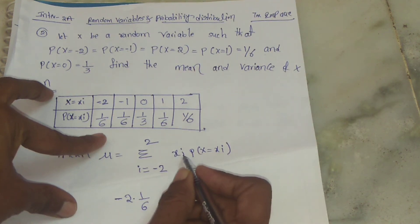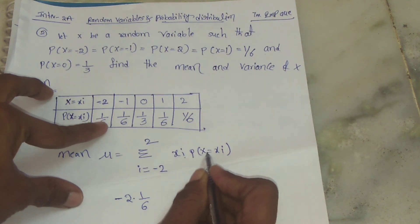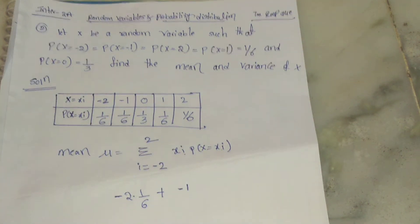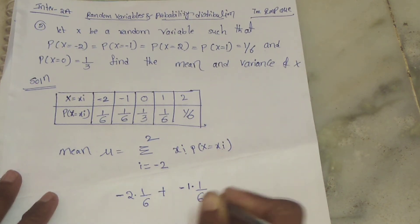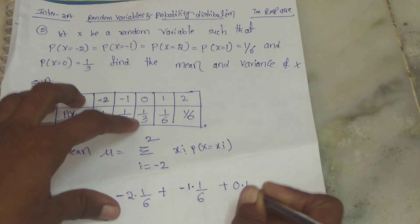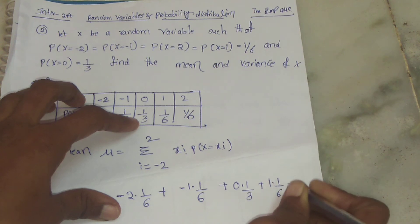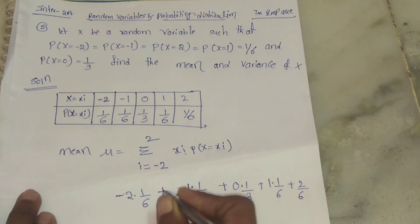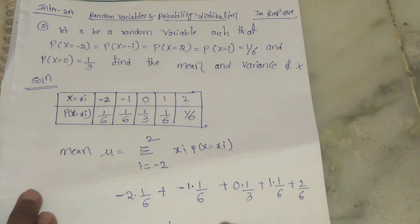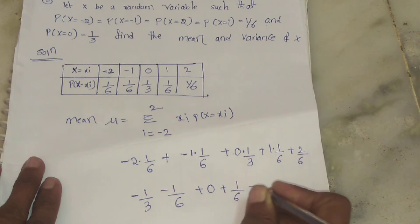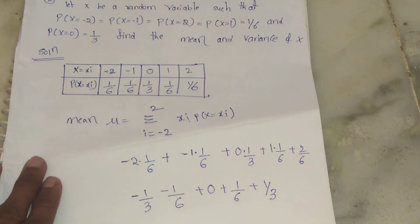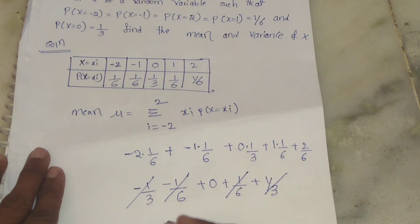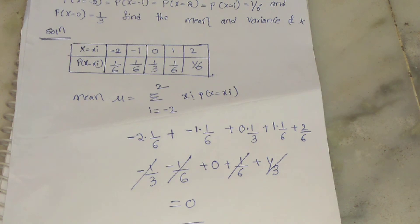Substituting: μ = (-2)(1/6) + (-1)(1/6) + (0)(1/3) + (1)(1/6) + (2)(1/6). This gives us -2/6 - 1/6 + 0 + 1/6 + 2/6. All terms cancel out: +1/6 - 1/6 - 1/3 + 1/3 = 0. So the mean μ = 0.